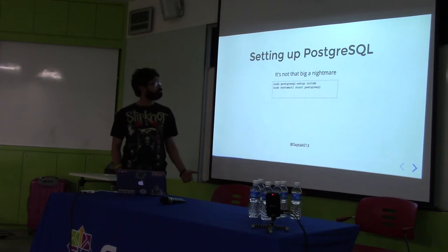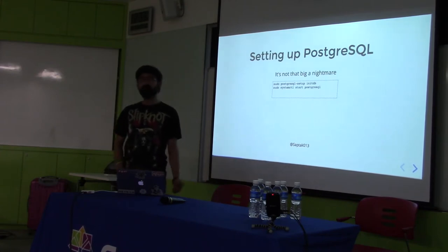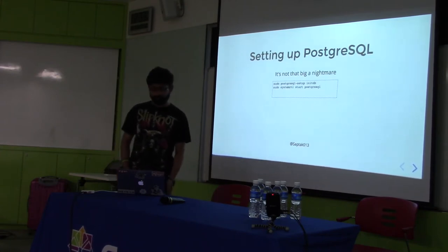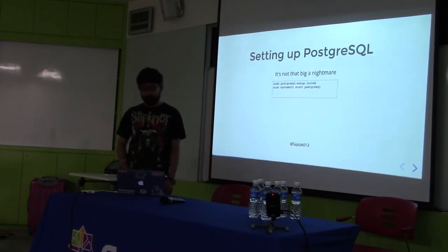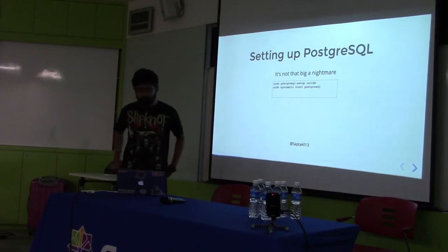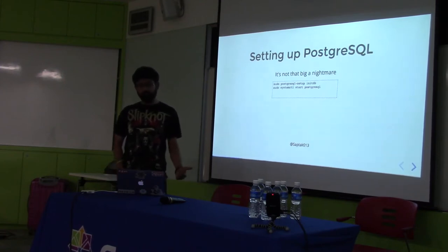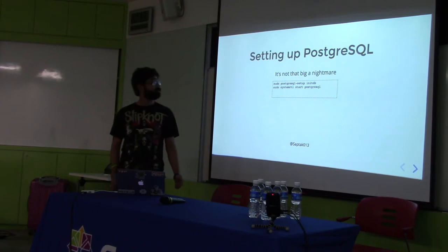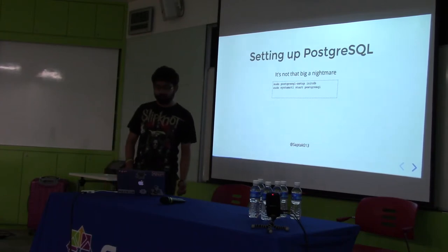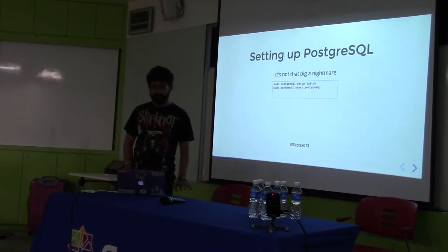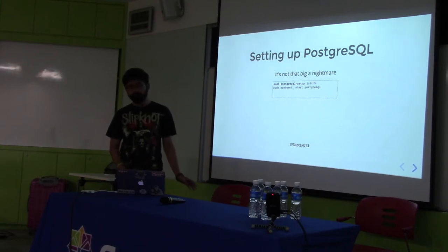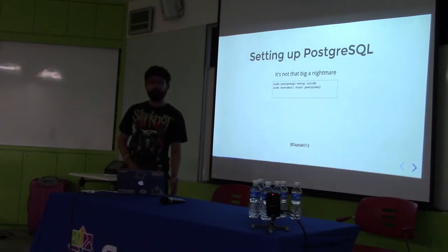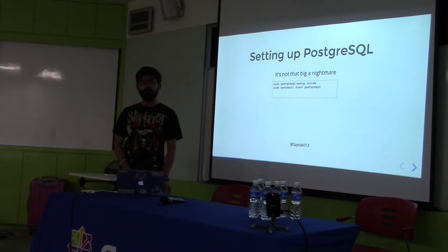Then we get started with setting up the database. I will be talking about PostgreSQL database setup because that's one of the databases commonly used with Django. In most of the documentation you will find, the PostgreSQL setup is just two steps: initdb and then systemctl start postgresql. It doesn't look like a big nightmare, but after that when you try to log into psql, it will fail.